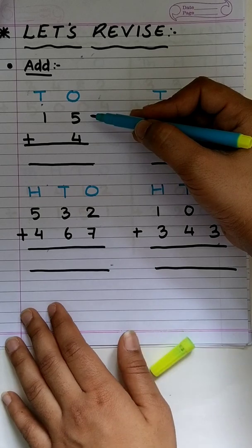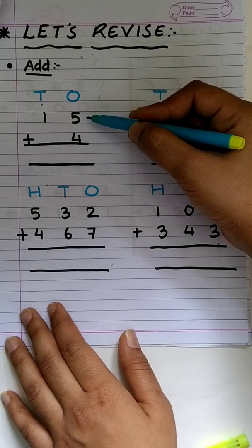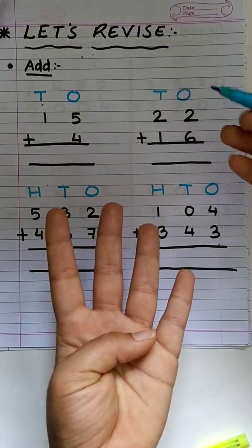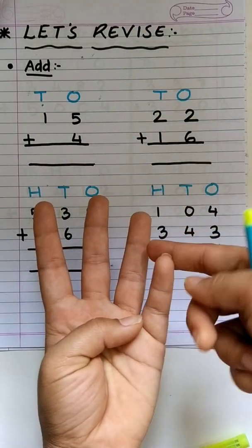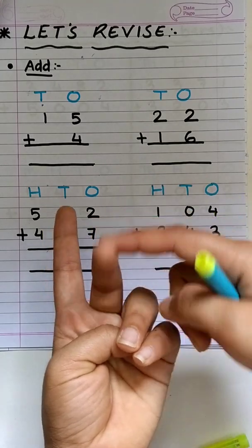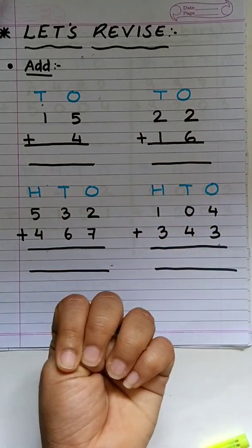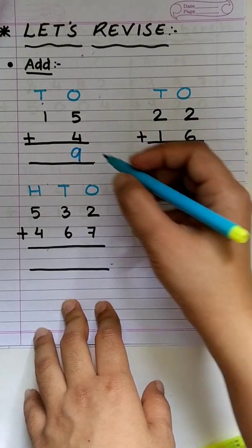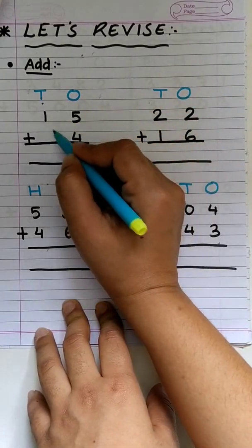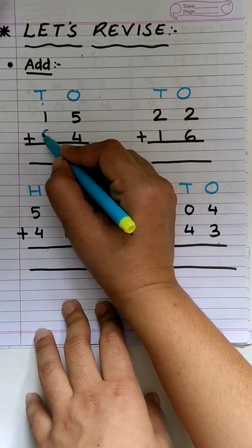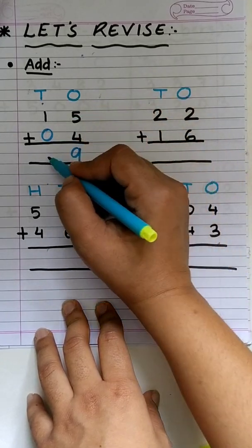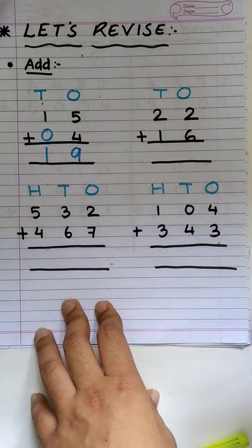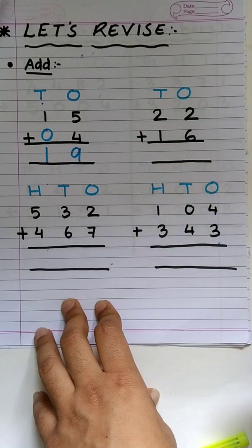Keep the bigger number in your mind and keep the smaller number on your fingers. So, after 5: 6, 7, 8, 9. Easy. We will write 9 over here. As we have nothing to add under 1, we will consider a 0 over here and 1 plus 0 will be 1. So, 15 plus 4 is 19. Easy, right?